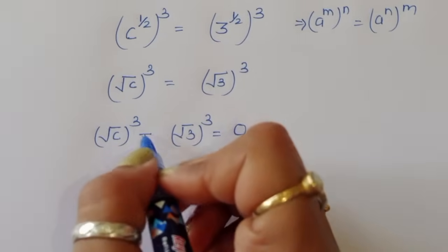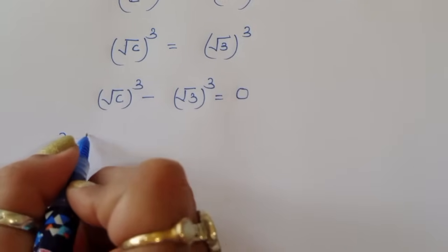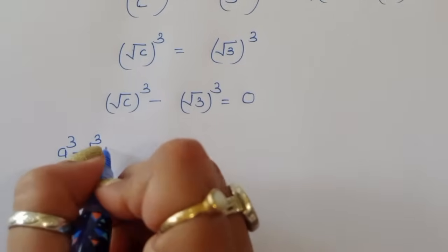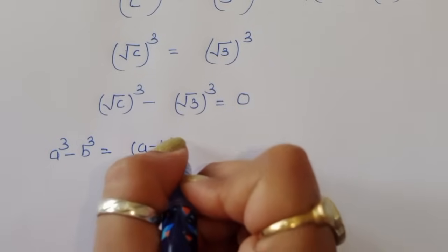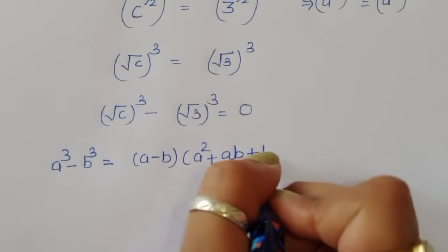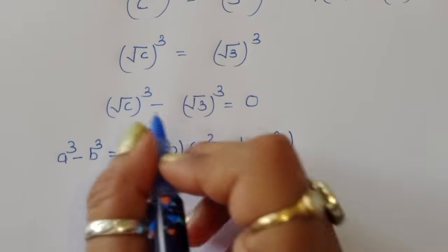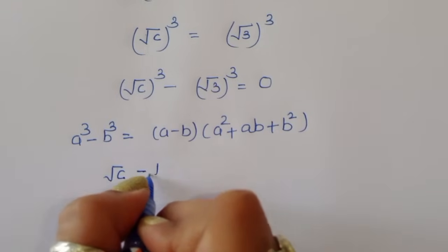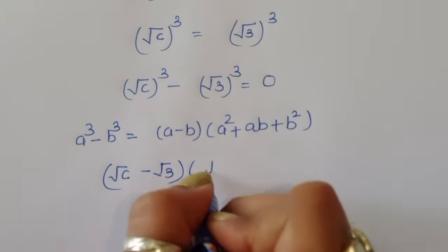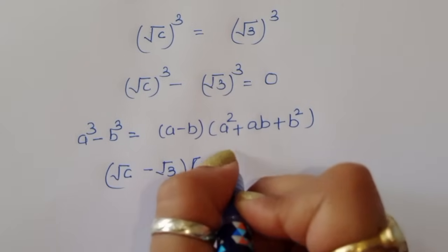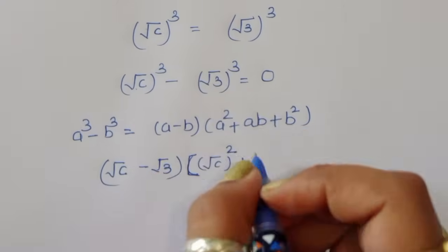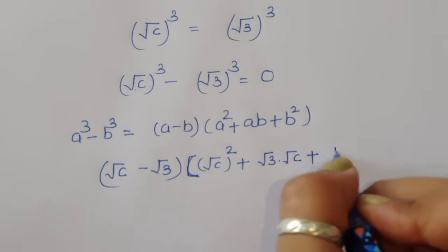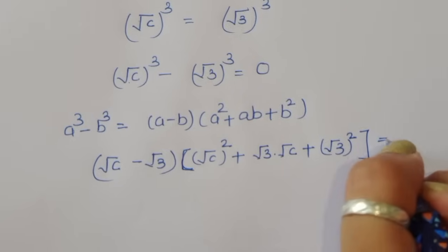This is the form of a cubed minus b cubed, where a equals square root of c and b equals square root of 3. Using the formula a cubed minus b cubed equals (a minus b)(a squared plus ab plus b squared), we expand: (√c minus √3) times (√c whole squared plus √c · √3 plus √3 whole squared) equals 0.